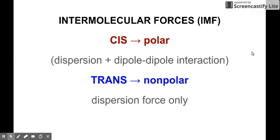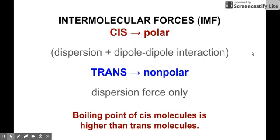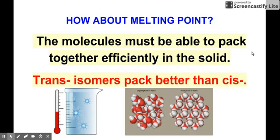Because of the stronger IMF that will lead to more heat, and more heat will lead to a higher boiling temperature compared to trans, which have a lower boiling point. So boiling point of cis is higher than the trans because of this IMF present in it. Okay, how about melting point?